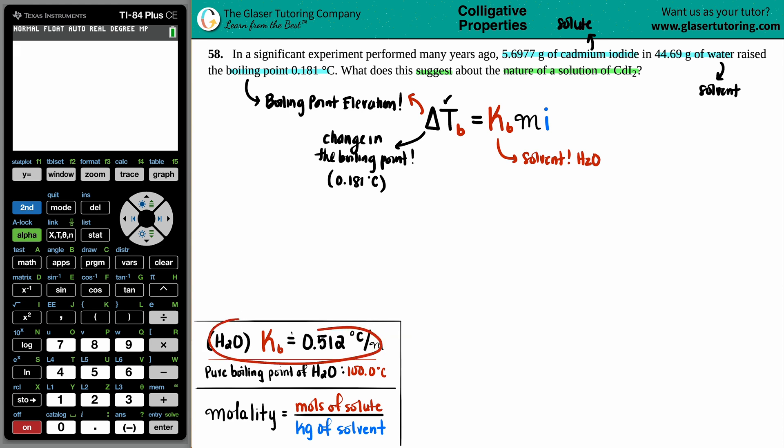So I did have to go to the textbook to find out what that KB value was. Hopefully on a test or quiz, they will give you this information. But the KB for water is 0.512 degrees Celsius per molality. So we know this information.